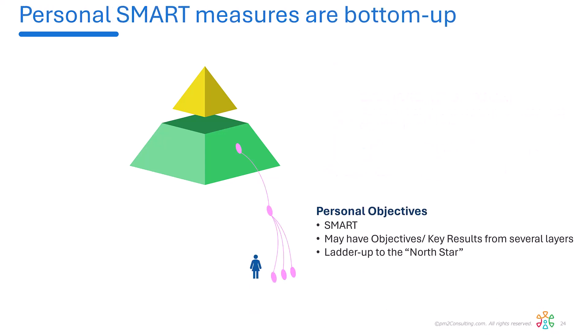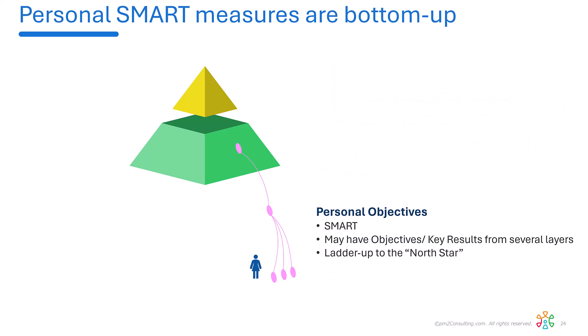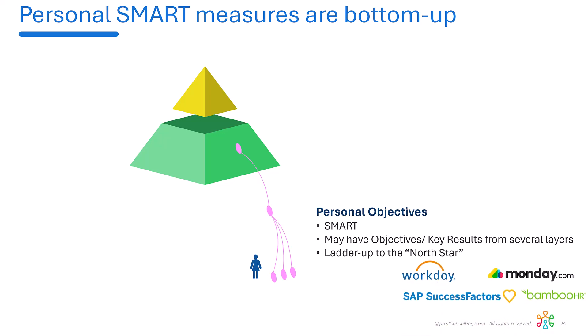Now, SMART goals are at the individual level. You may have goals at several levels of the organization, consolidated and so on. The dream is eventually to show by line of sight how they line up with the North Star. They're typically SMART measures, and they have a faster cadence. I'm looking at it at the individual level, and they're reported in things like Workday, Monday, SuccessFactors, BambooHR, and so on.